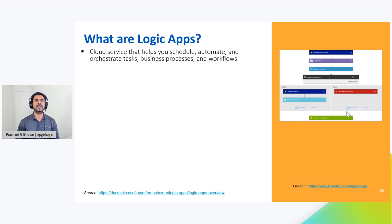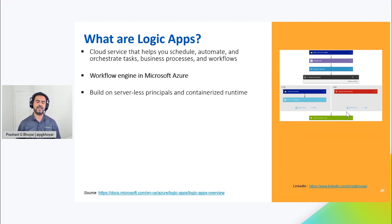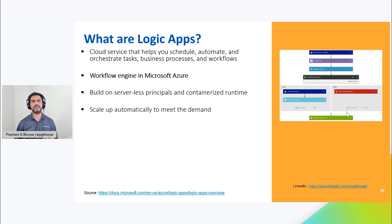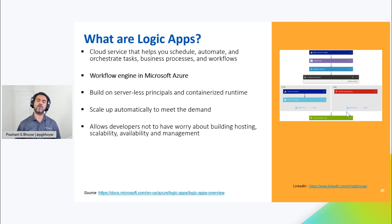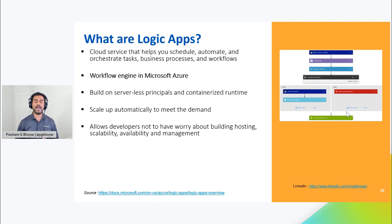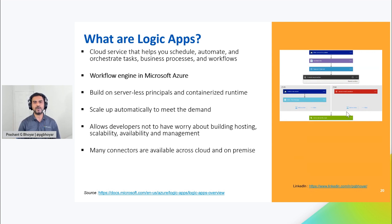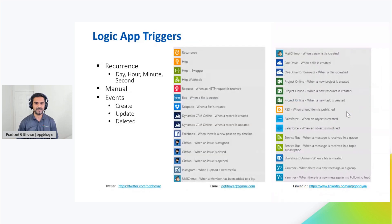Logic Apps is a cloud service that helps us schedule, automate, and orchestrate tasks, business processes, and workflows. It is the de facto workflow engine in Microsoft Azure. Just like Power Automate, it's built on serverless principles and uses a containerized runtime in the backend. Depending on usage, it can scale up and down automatically to meet demand. A key advantage is you can focus on implementing your business logic without worrying about hosting, security, or patching. Just go to the Azure portal, create a Logic App, and start implementing your business logic. Like Power Automate, there are many connectors available across cloud and on-premise. Everything begins with a trigger — triggers can be time-based, manual, or event-based.